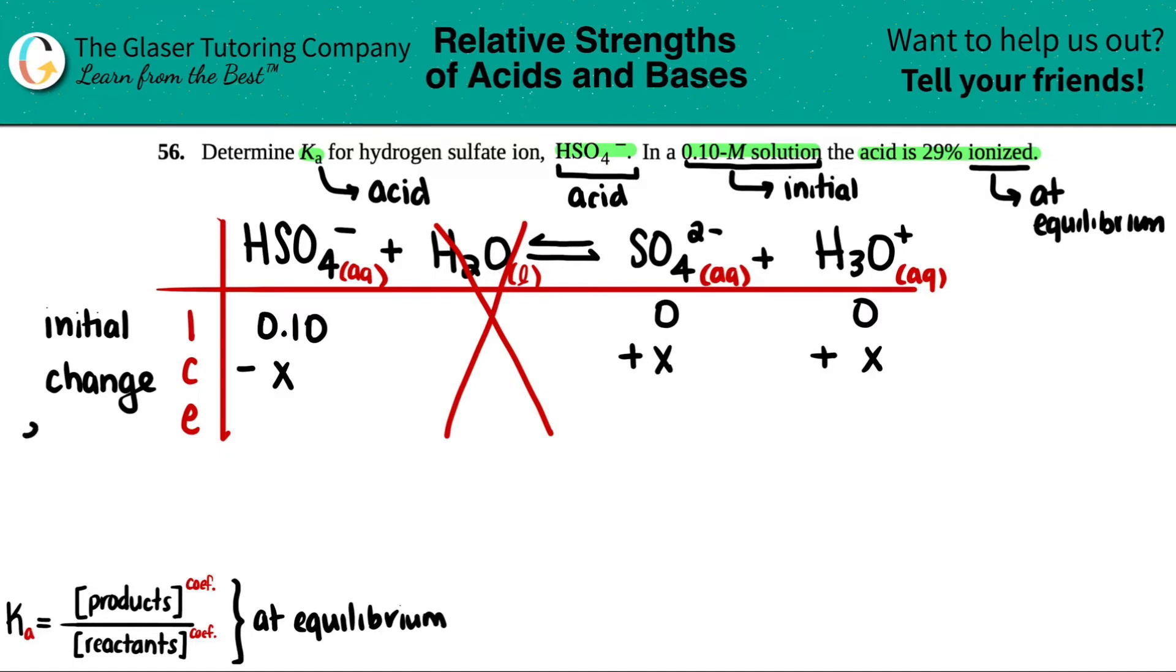E stands for equilibrium. Equilibrium is when you pull together your initial and your change. So 0.10 minus X is just 0.10 minus X. Zero plus X is just X. But now we know the percent ionization is 29%. When I think ionization, I ask myself, is there an equation I know that has to do with percent ionization? And I do.